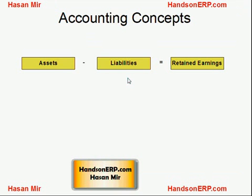This is a quick recap of the accounting concepts. This is the accounting equation, which remains balanced all the time in an ERP software, because it is the responsibility of an ERP software to make sure that this equation remains balanced all the time. If it's not balanced, that means there is data corruption.